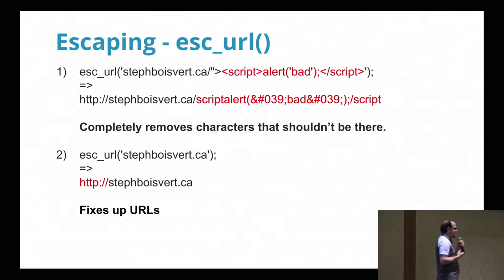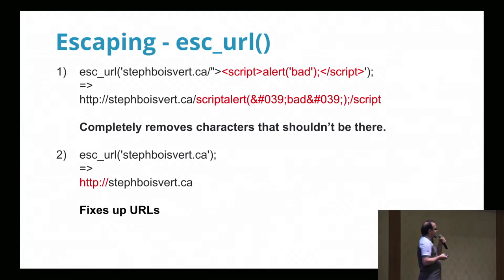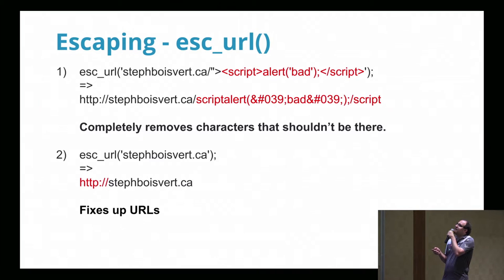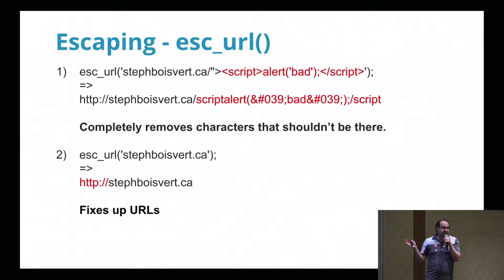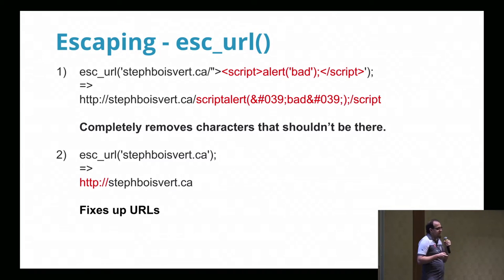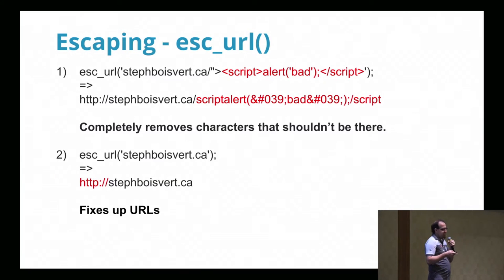esc_url is also a useful function. It not only escapes your URL but tries to fix it if something is wrong, getting rid of anything that shouldn't be in the URL. For example, script tags and angle brackets are removed completely. It will also add HTTP or HTTPS at the beginning if you pass a bare domain like stephboisva.ca.